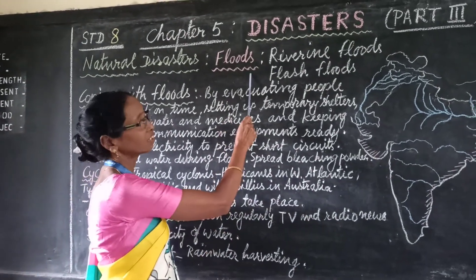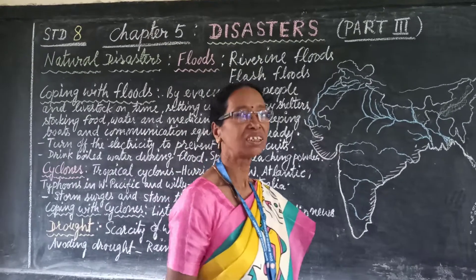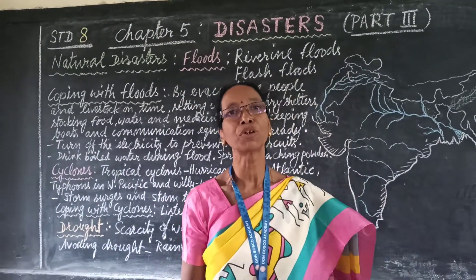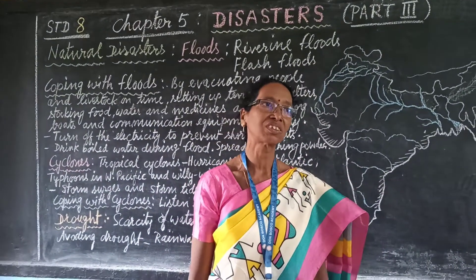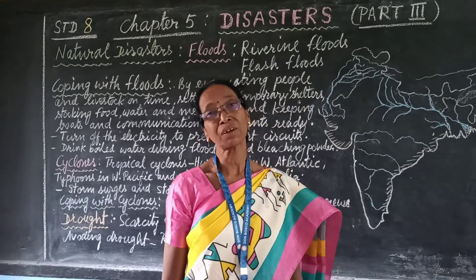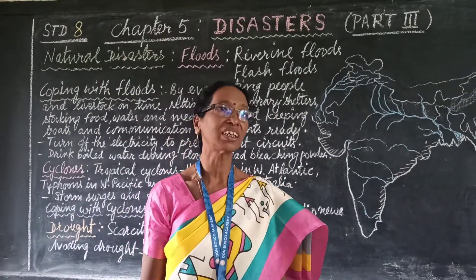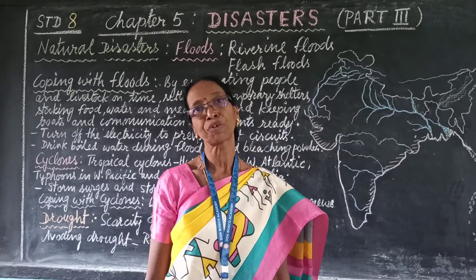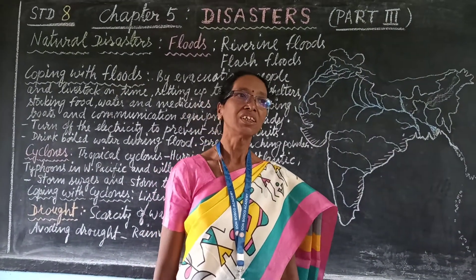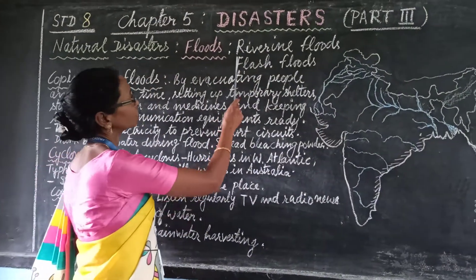Floods. What is a flood? When there is overflow of rivers or there is very heavy rainfall, a large low-lying area gets flooded due to the overflowing of rivers. There are two types of floods.